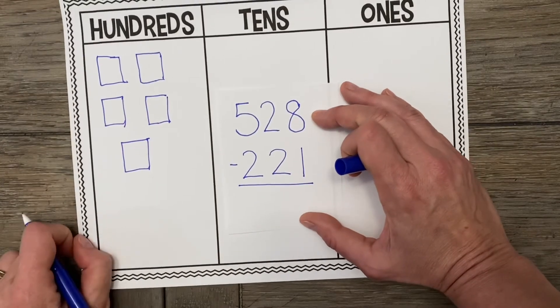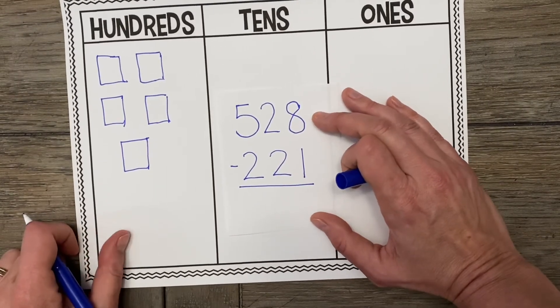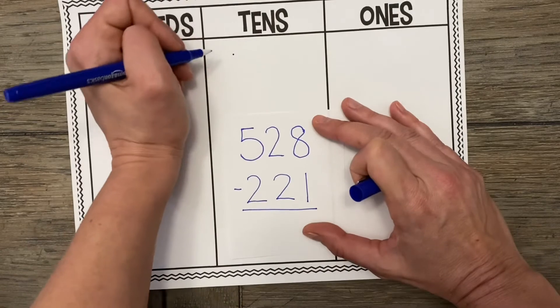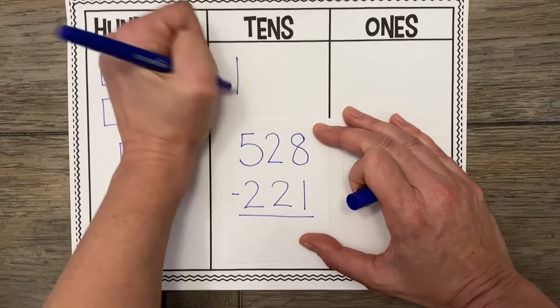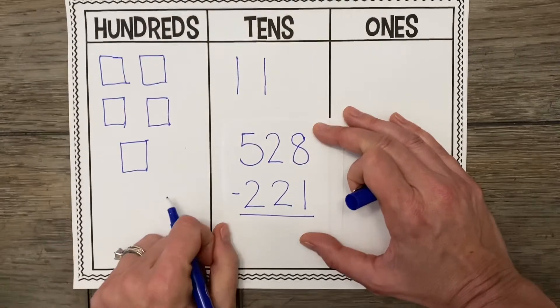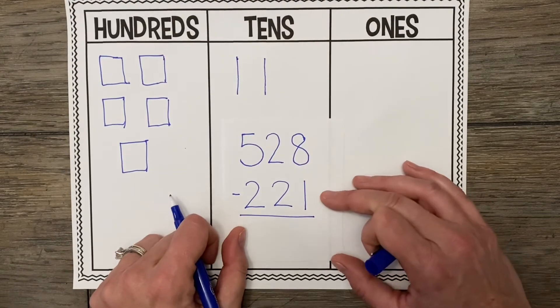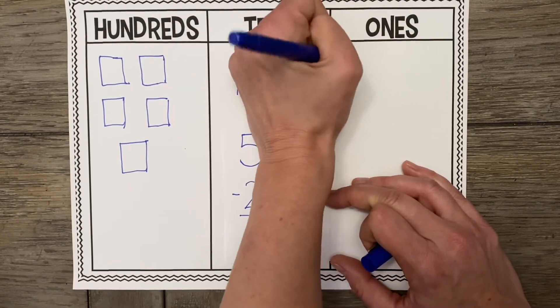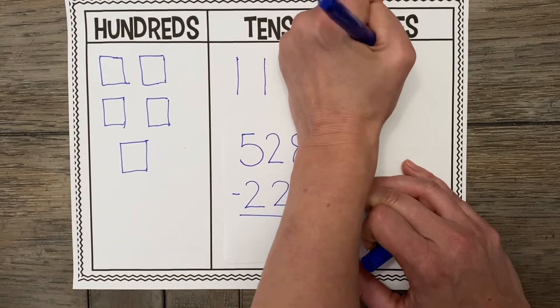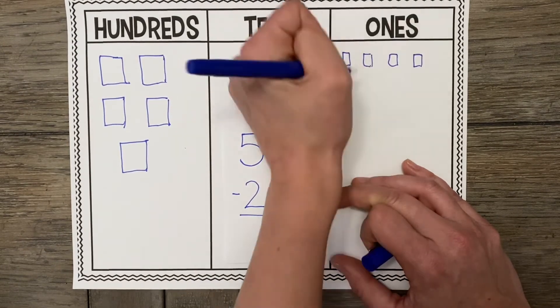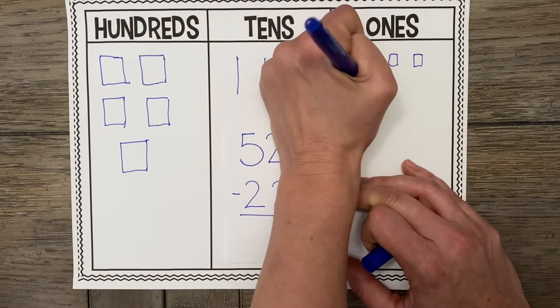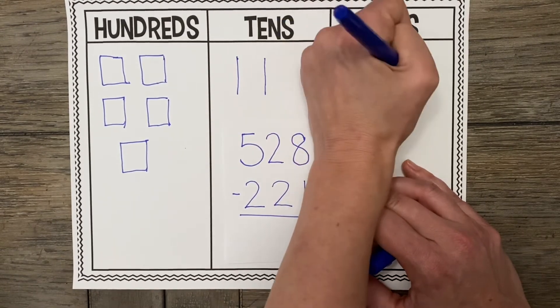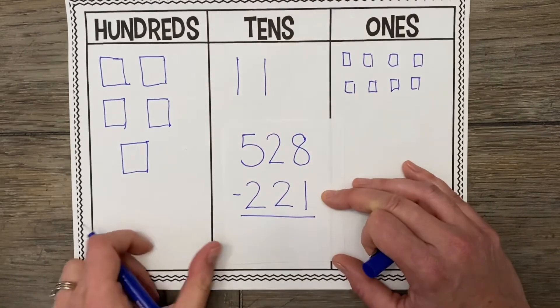So let's draw that 528 now. Great job drawing those 100s. Now what do we need to draw? You got it. Two 10s it is. And then finally, what do we draw? That's right. 8 ones.